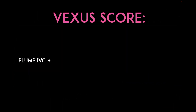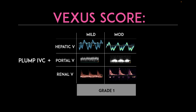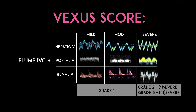Now let's put all of that together to determine the Vexus score. Starting with a plump IVC: if all three waveforms are in the mild or moderate category, that's grade one. If any one of the waveforms is in the severe category — for example, two milds and one severe — that is grade two. And if two or more waveforms are in the severe category, that is a grade three Vexus score.